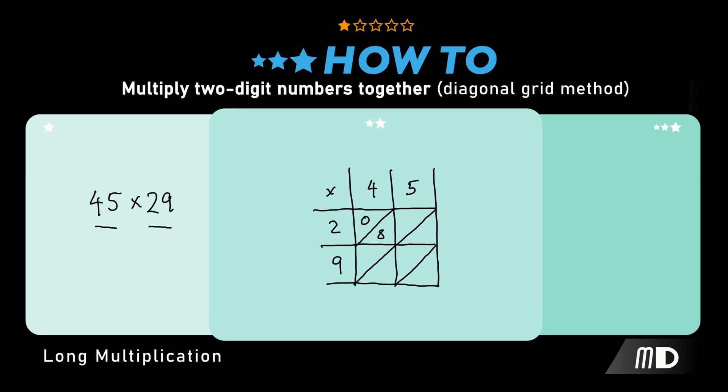And the 5 times 2 is 10, so the two digits go 1 there and 0 there. There's our 10. 4 nines are 36, so the 3 goes there and the 6 below it. And the 5 times 9 gives us 45.